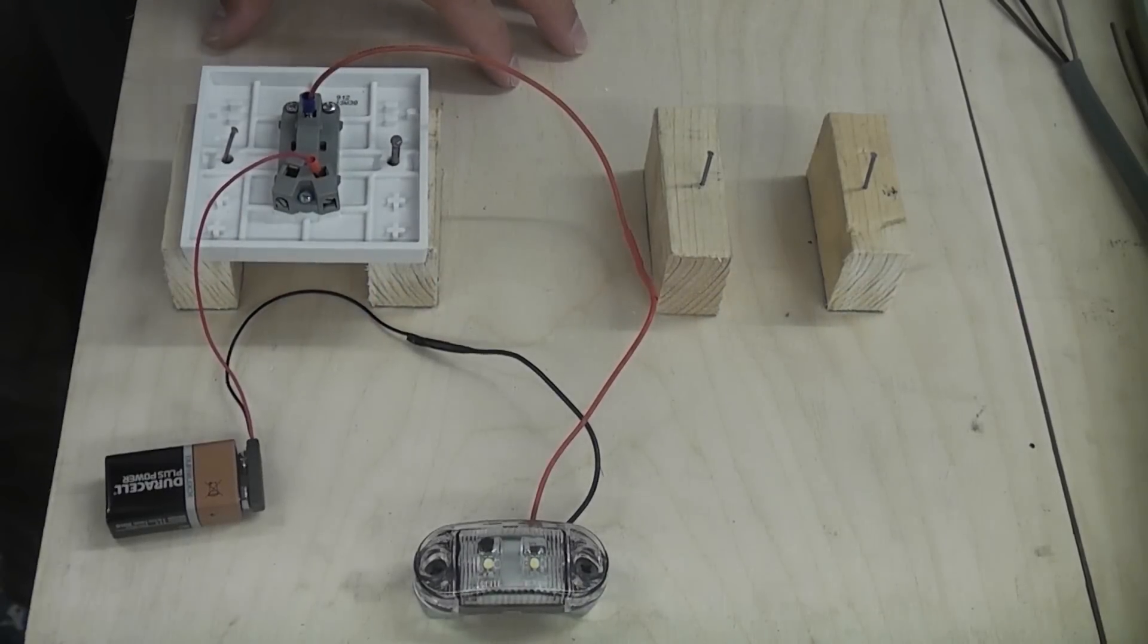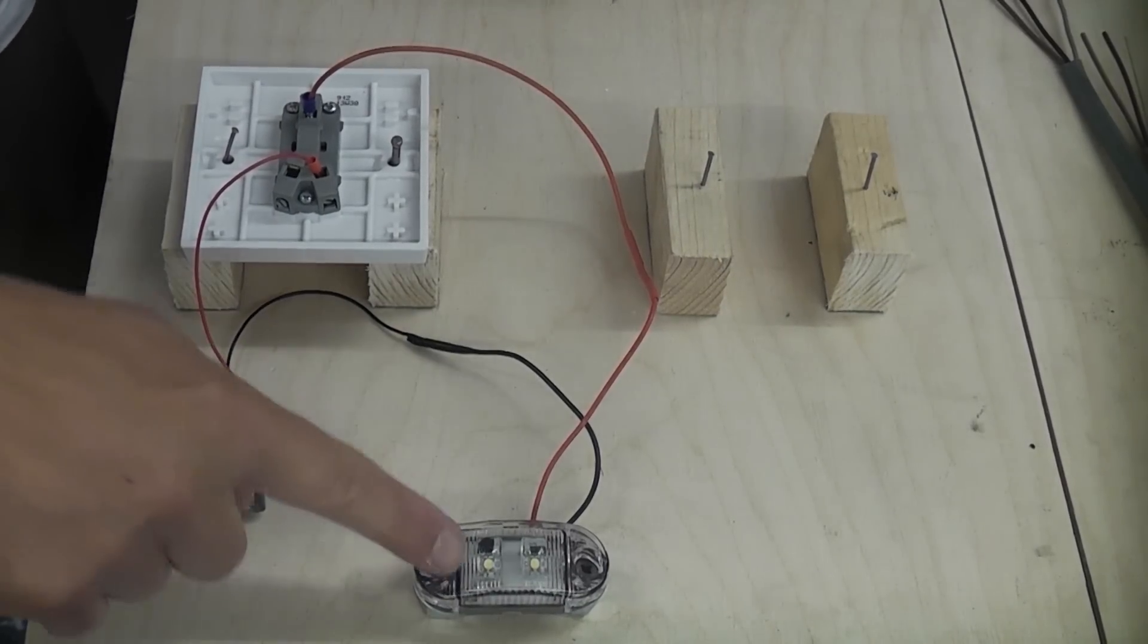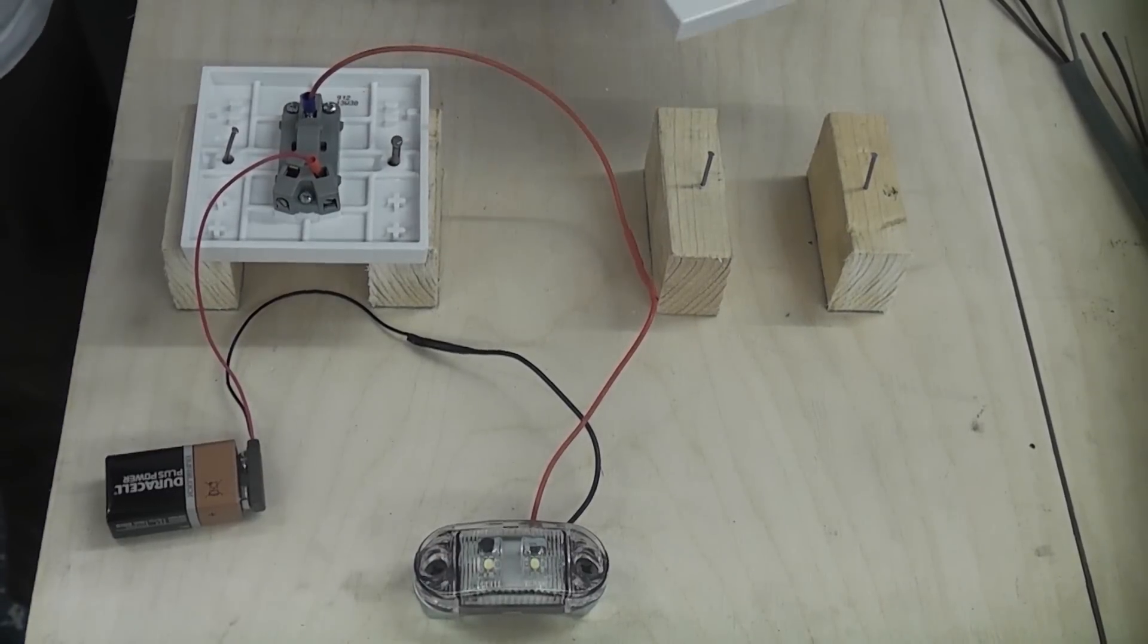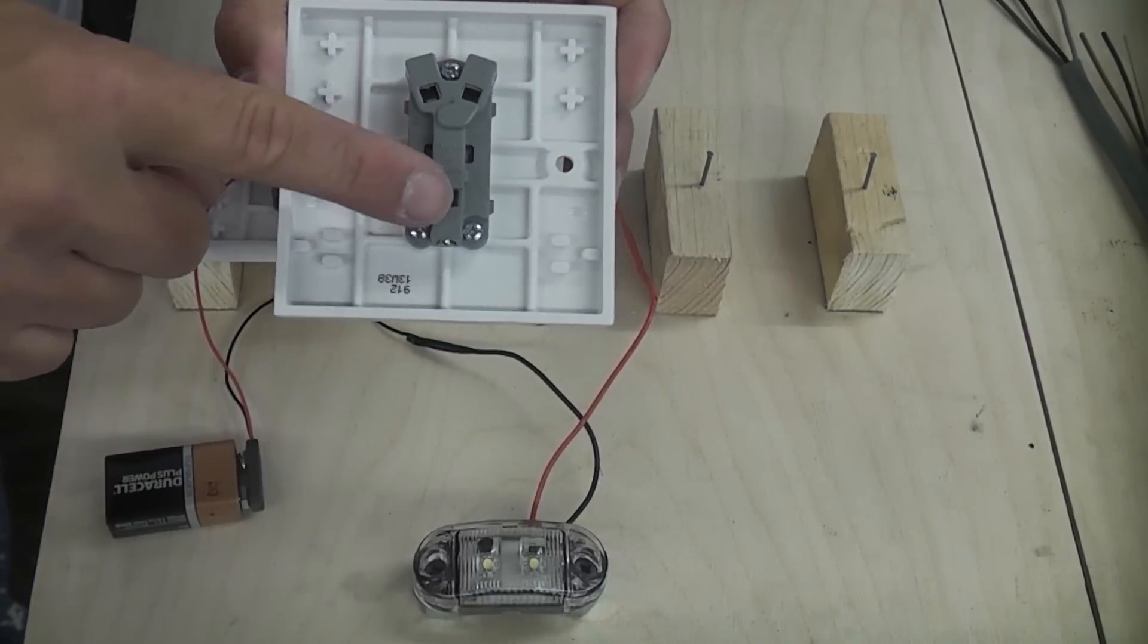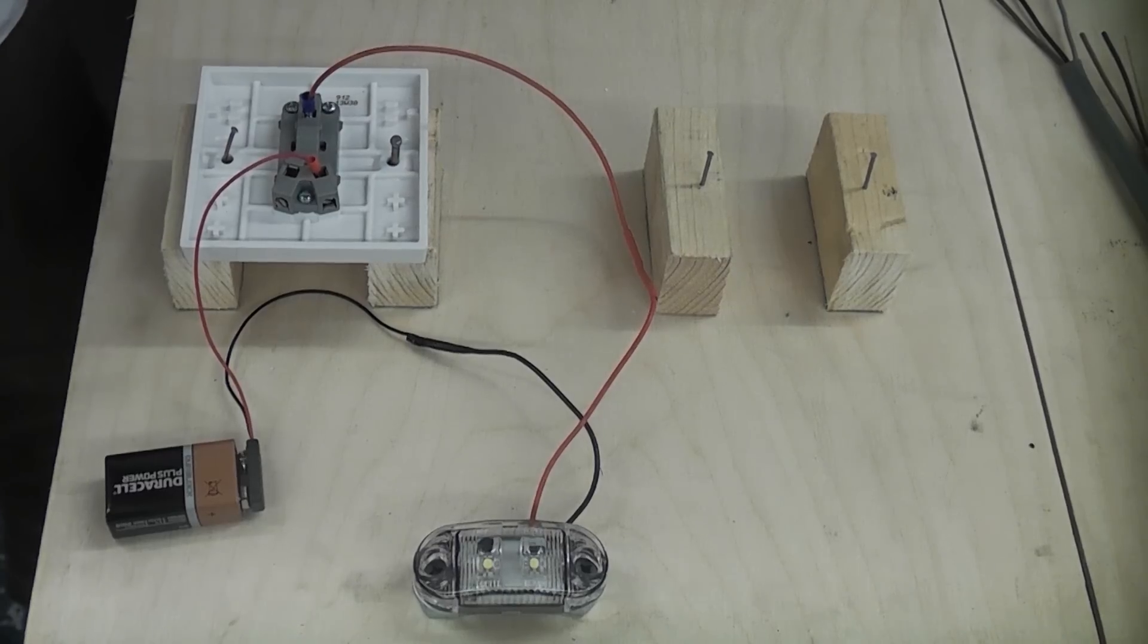This video is going to explain how two-way switching works. In some countries it's called three-way switching, but in the UK it is called two-way switching. That means that you have one light which is represented by this lamp that can be switched off from two locations. In other countries they do call it three-way lighting such as in America, because the switches used do have three ways, but in the UK this is normally known as two-way switching.